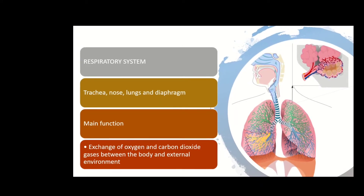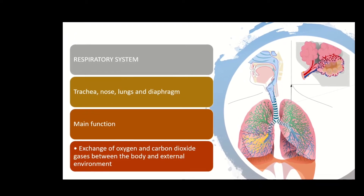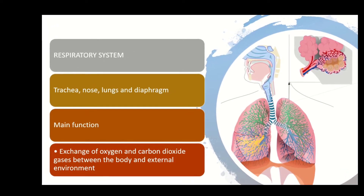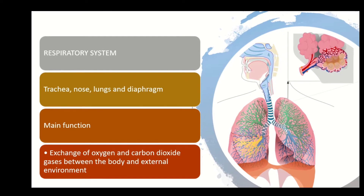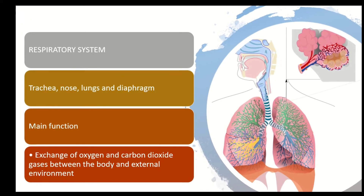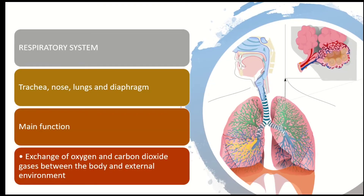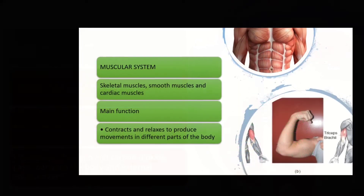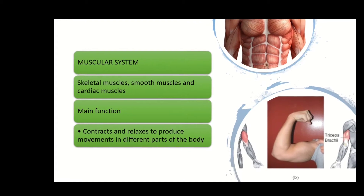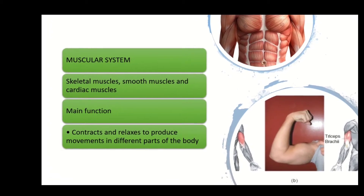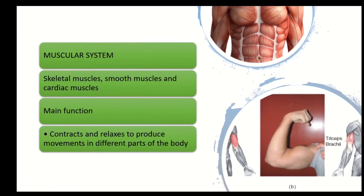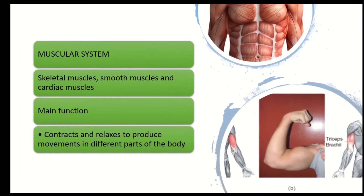The respiratory system consists of the trachea, nose, lungs, and diaphragm. The main function is to exchange oxygen and carbon dioxide gases between the body and the external environment. The muscular system consists of skeletal muscle, smooth muscle, and cardiac muscle. The main function is to contract and relax to produce movement in different parts of the human body.